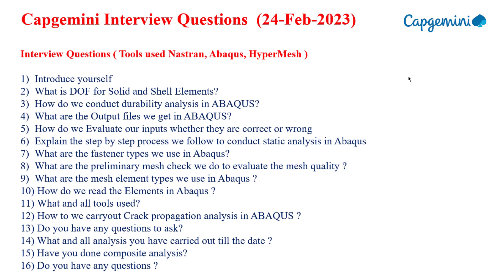The next question is: how do we conduct fatigue/durability analysis in Abaqus? Try to do the analysis and explain the steps one by one and what results you're going to get. The next question is: what are the output files we get in Abaqus? You get the .odb file and other formats, including warning messages, input data, and output data. There are multiple output file extensions — research these properly and explain each file extension.